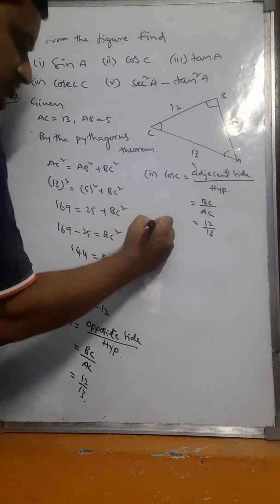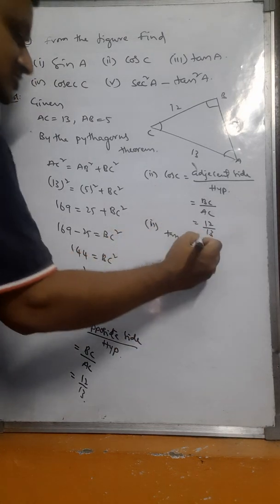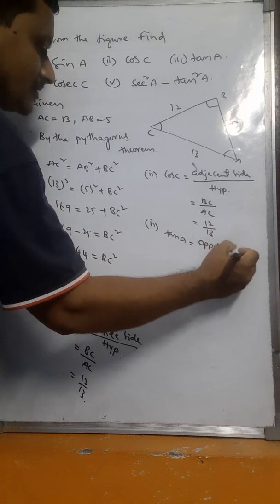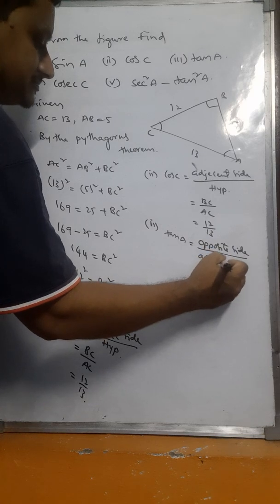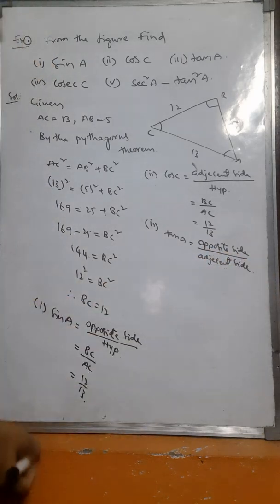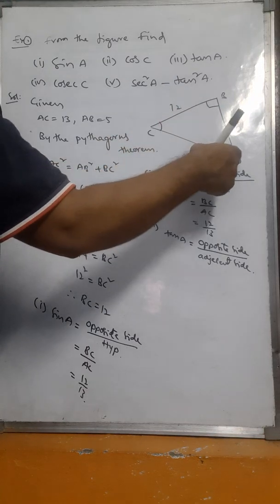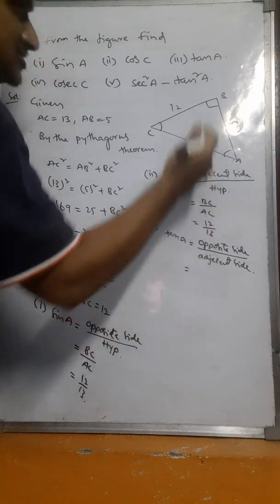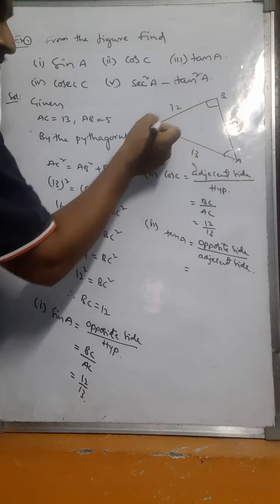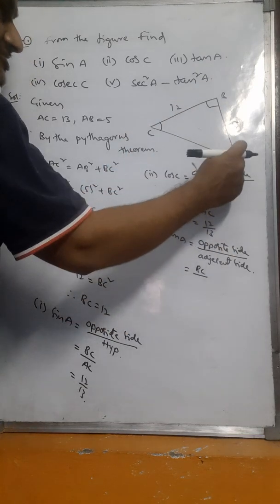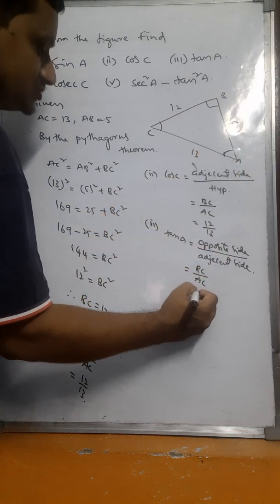Tan A equals opposite side by adjacent side. The opposite side to angle A is BC and the adjacent side is AB. So tan A equals BC by AB, which is 12 by 5.